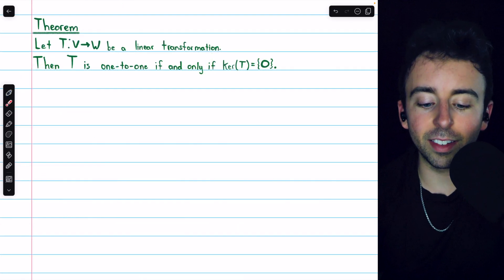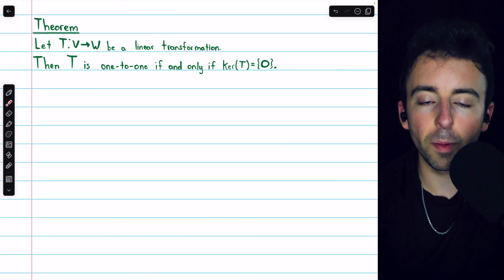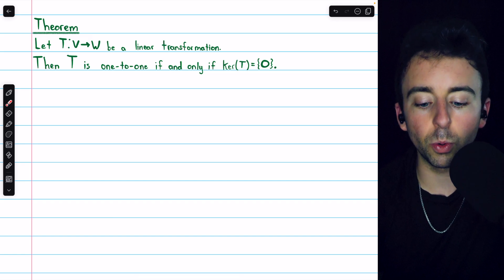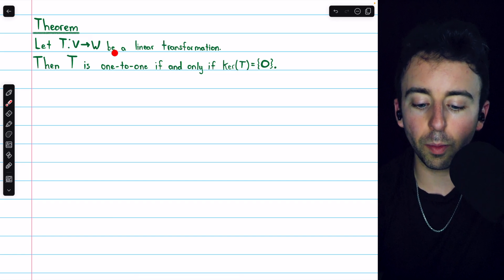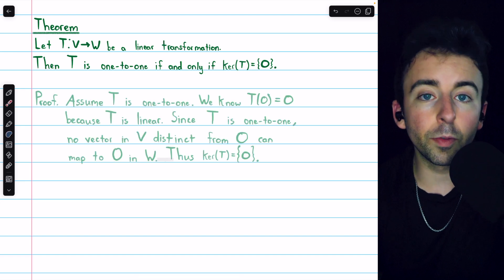Before we look at examples, let's prove this little theorem establishing an equivalence between a linear transformation being one-to-one and having the zero space as its kernel.